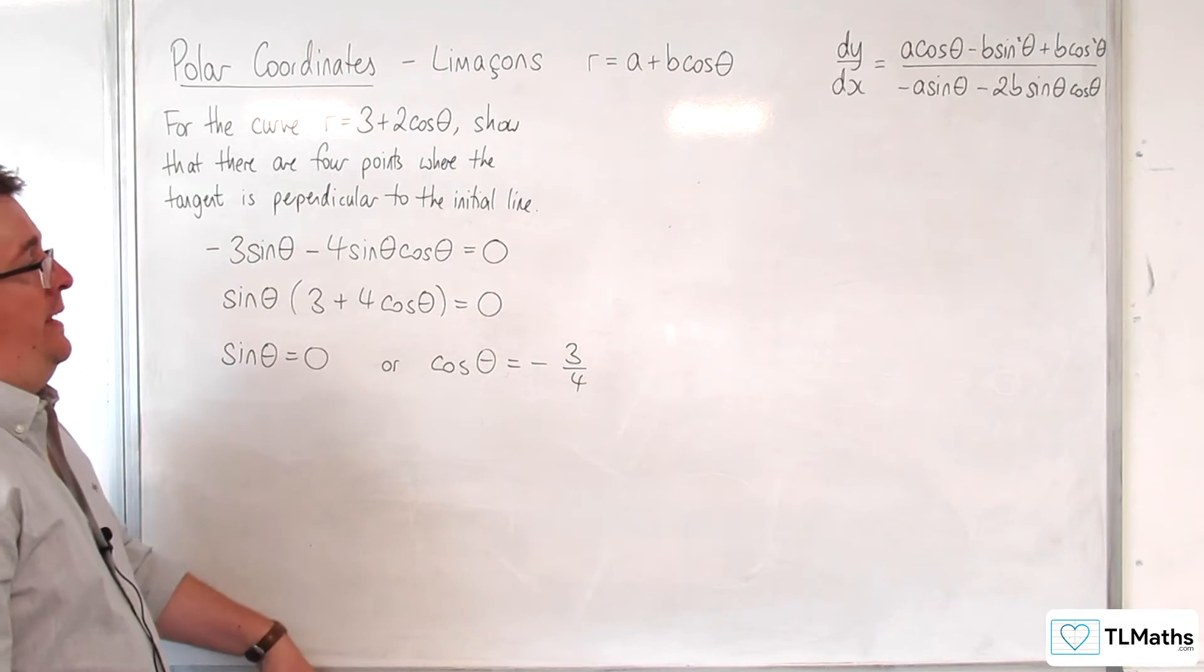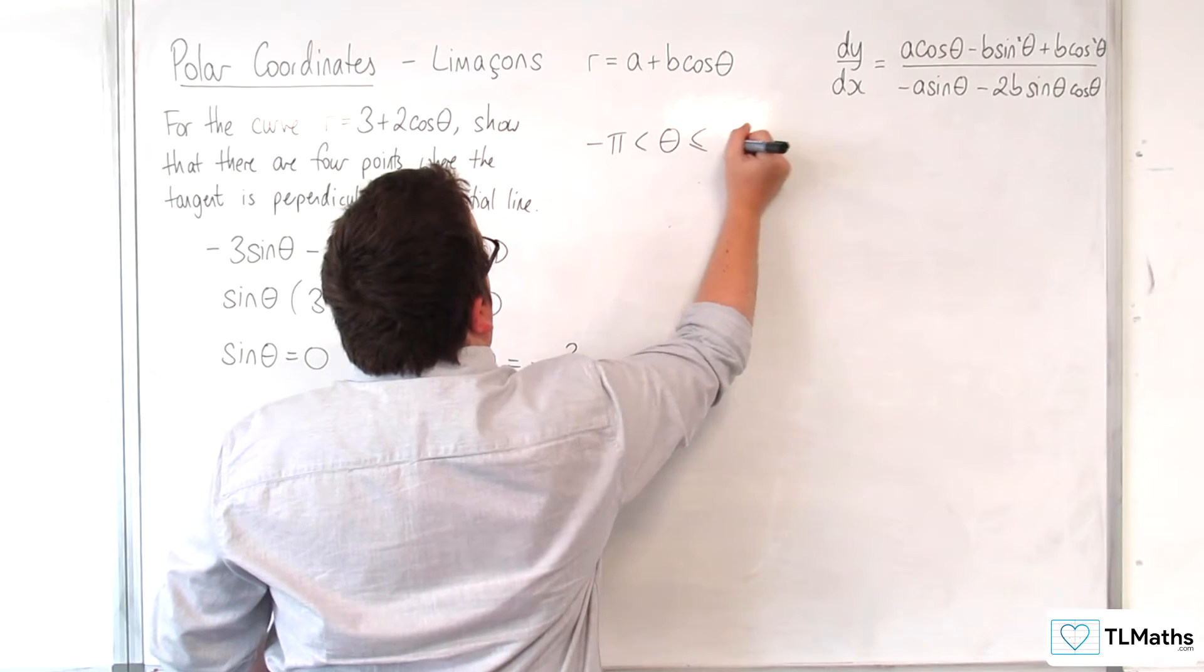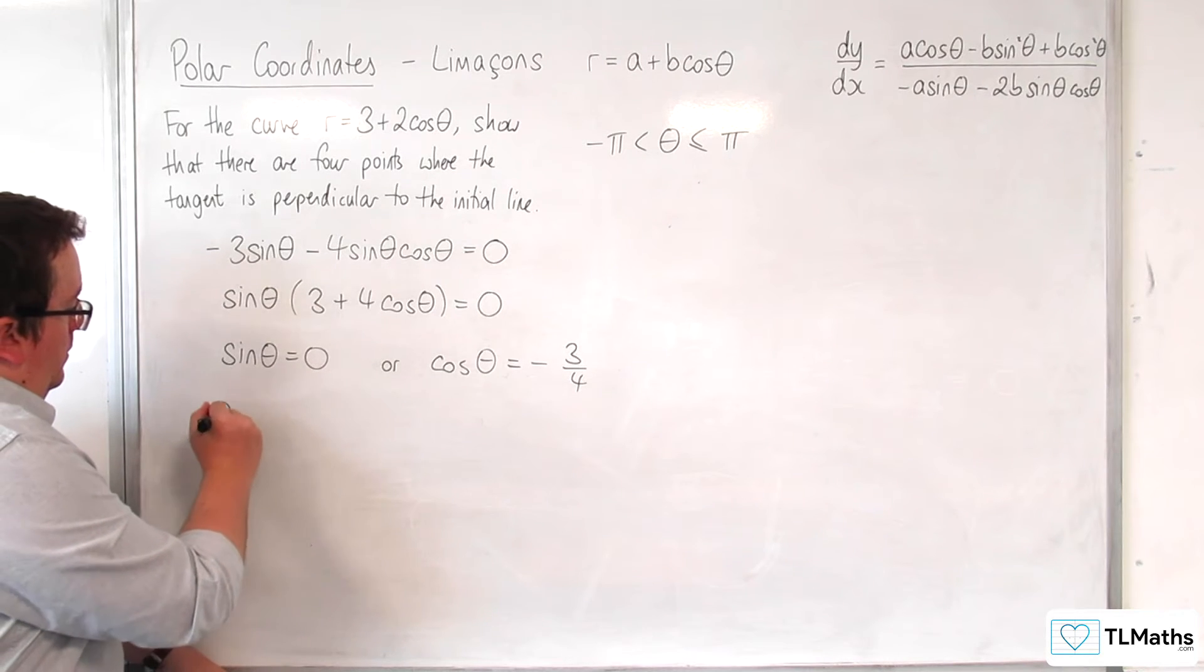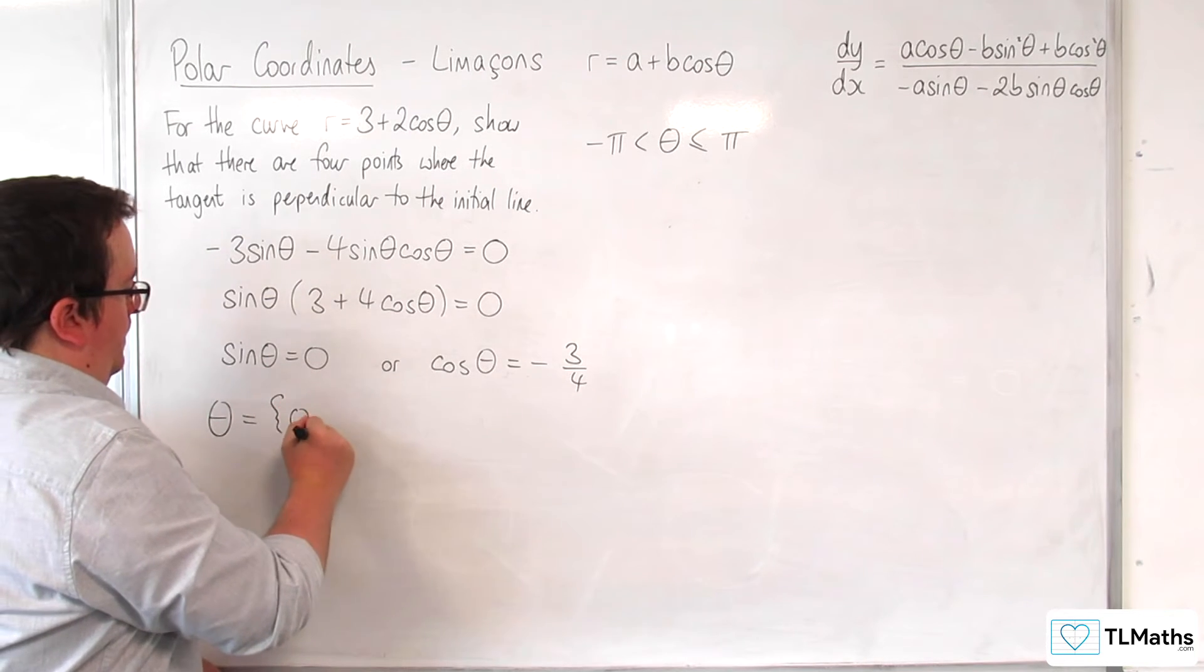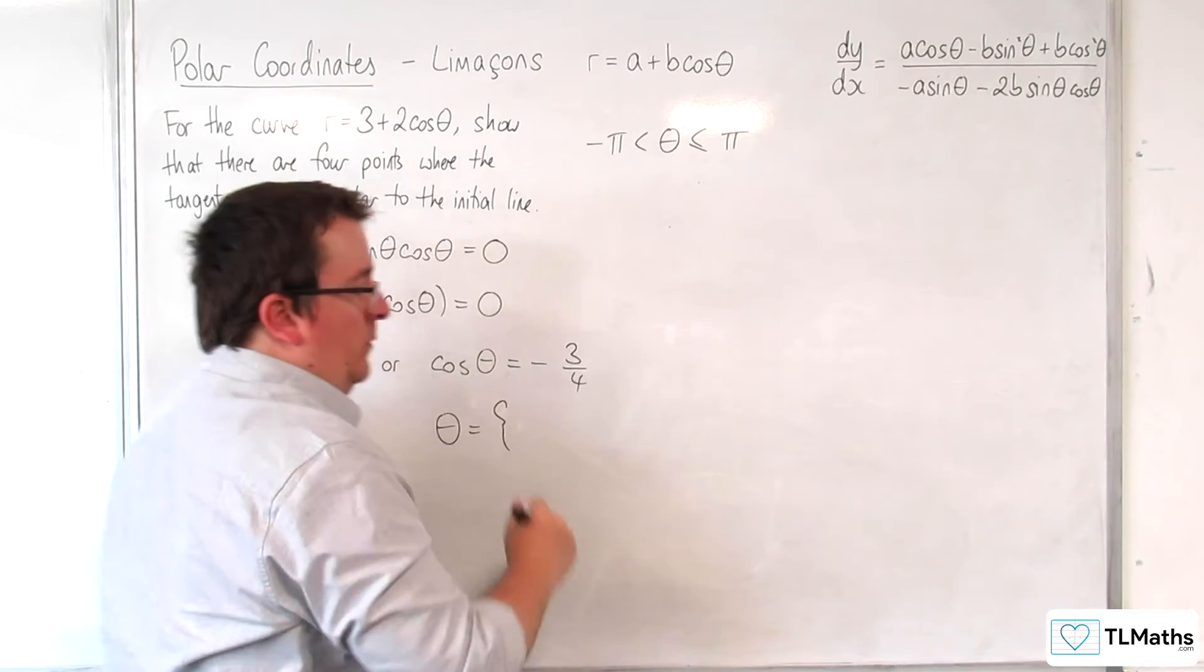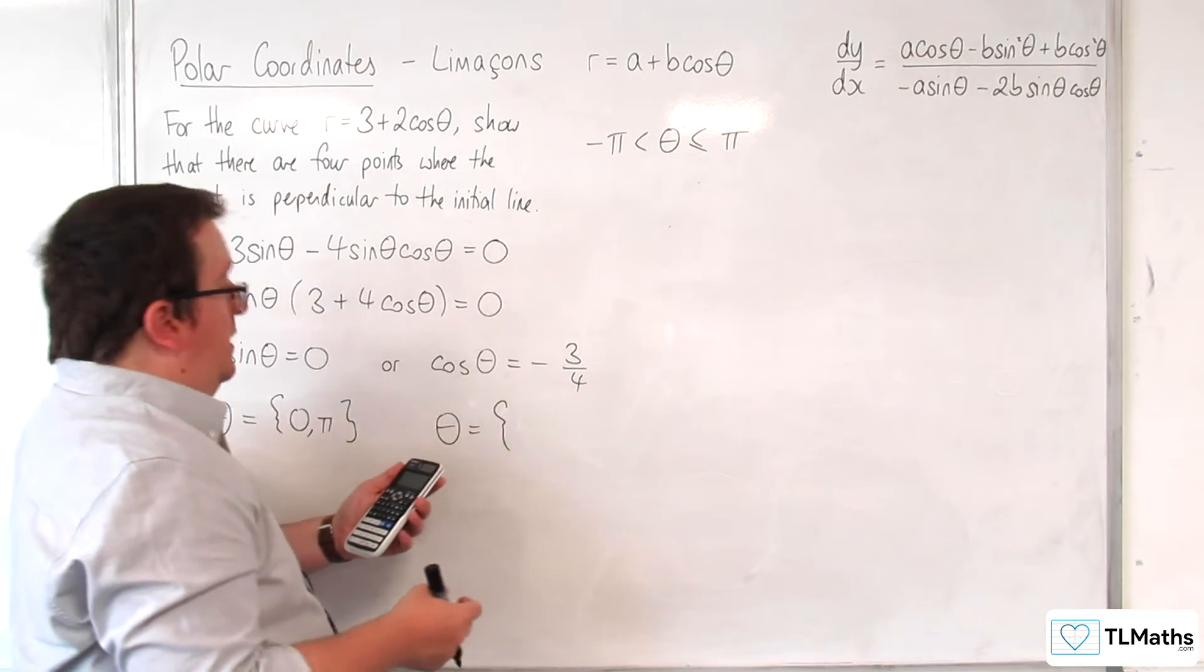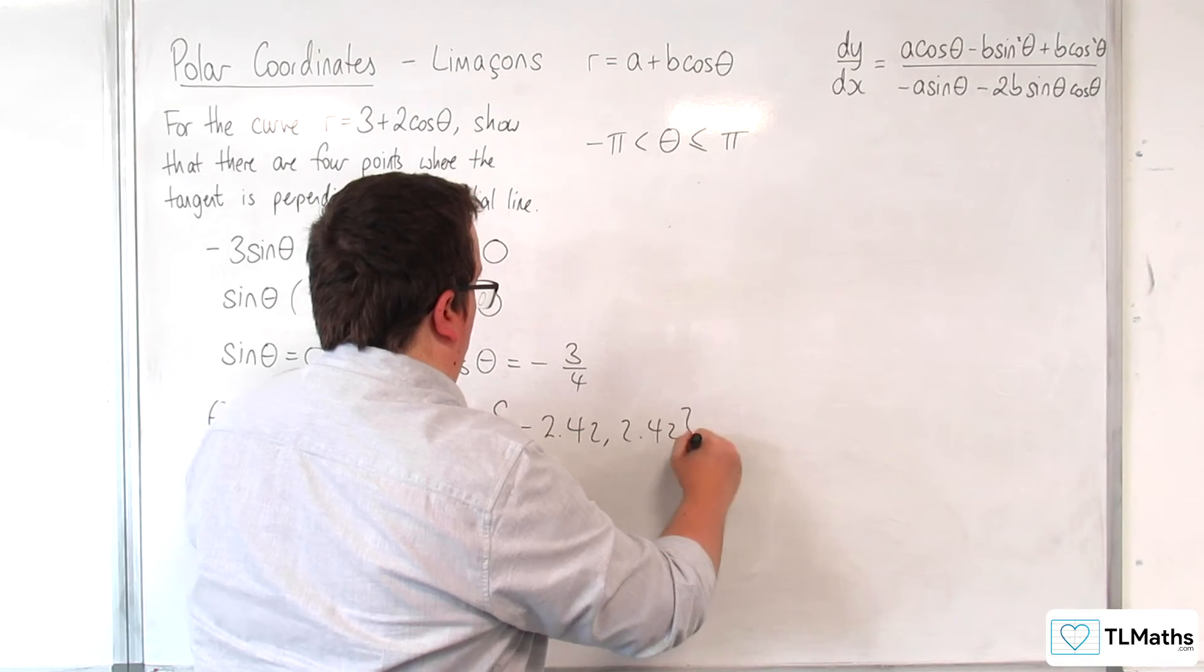Now we're looking for solutions to these between minus pi and pi, so including pi but not including minus pi. So sine of theta equals 0, well that's going to have the solutions of 0 and pi. And cosine theta equals minus 3 quarters, inverse cosine of minus 3 quarters, we are going to have minus 2.42 to 3 sig fig and 2.42 to 3 sig fig.